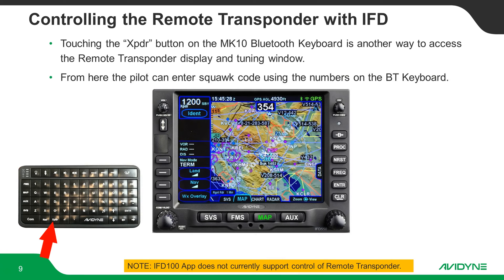If you have the Bluetooth keyboard connected, you'll notice there is a transponder button. If you push it, it will bring up the transponder window where the COM used to be. So you can control the COM, you can control the NAV, or you can control the remote transponder right from the Bluetooth keyboard.